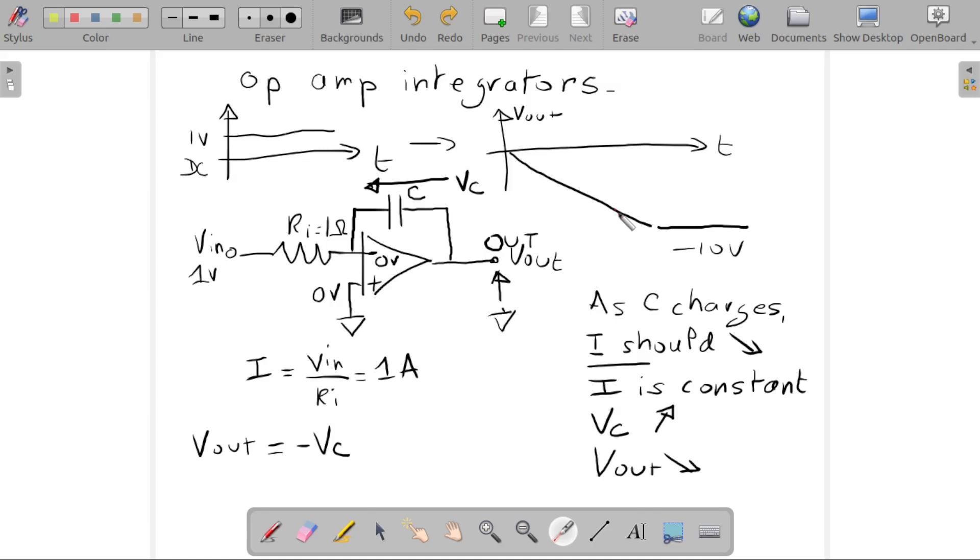Another use is for a function generator. If you have a pulse or a square wave, you can transform it into a triangular wave. And I think there's another use, which is filters like a low-pass filter or averaging. You can average voltages with an integrator. I must admit I don't fully understand how it works, so I'm not going to go into the details. But it can definitely be used as a filter.